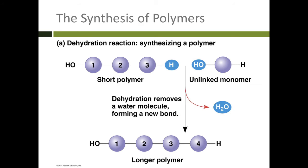We make a polymer using a dehydration reaction. It's called dehydration reaction because we're taking away water. When you take away water, it allows for a covalent bond to form between the last monomer on the chain and the unlinked monomer. This causes a longer and longer polymer to grow.